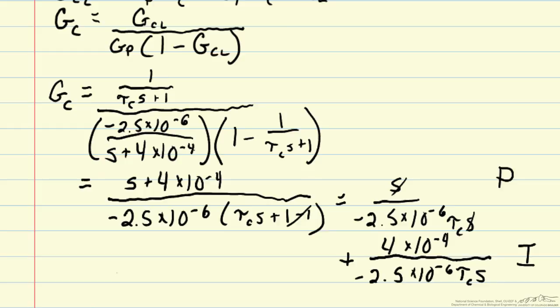And it's that integral term that allows us to get rid of any steady state error in this process by integrating over the error so that we don't have the steady state error problem associated with purely proportional control.